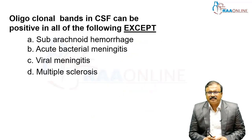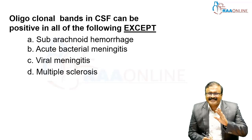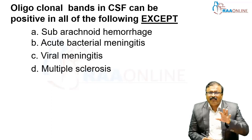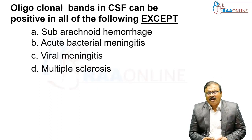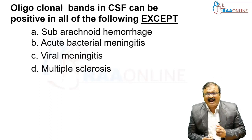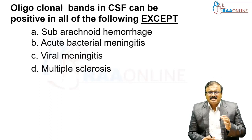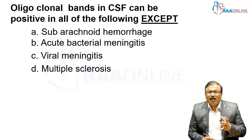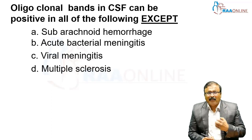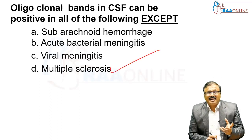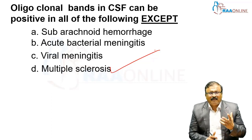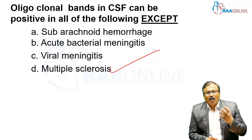Oligoclonal bands in CSF can be positive in all of the following except — these oligoclonal bands develop in any inflammation of the CNS. A higher number of bands indicates a more specific diagnostic entity. Oligoclonal bands are commonly seen in multiple sclerosis. In other inflammatory conditions, minimal oligoclonal bands are definitely seen in CSF, including viral meningitis and acute bacterial meningitis.